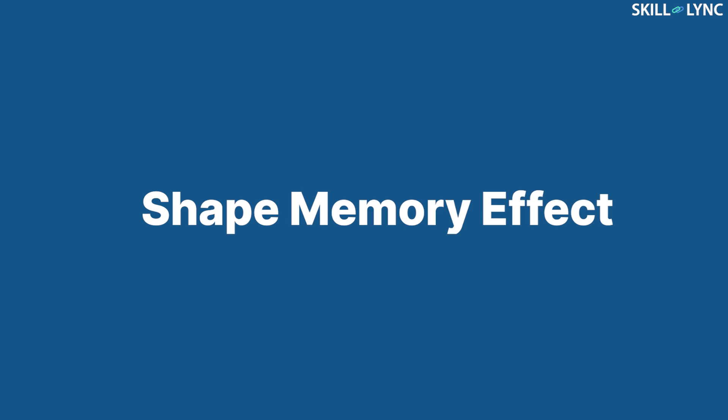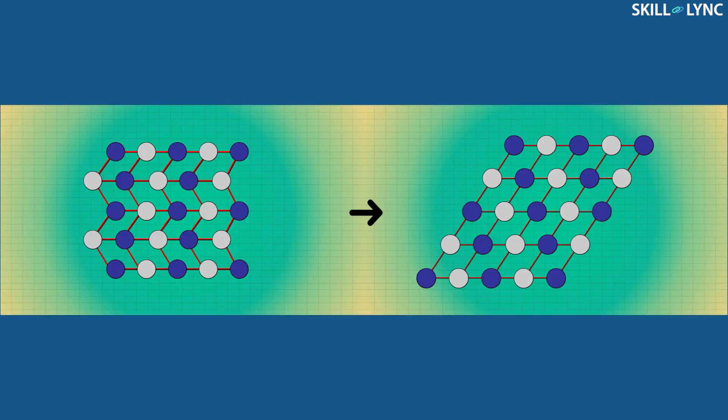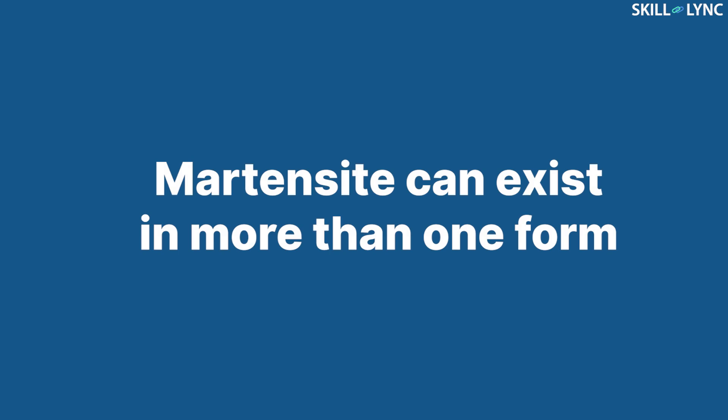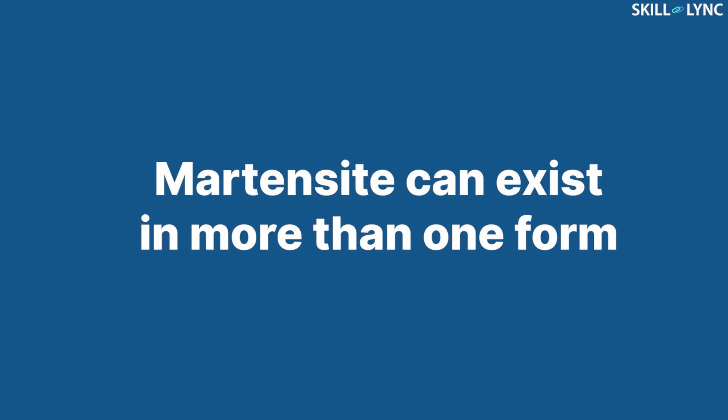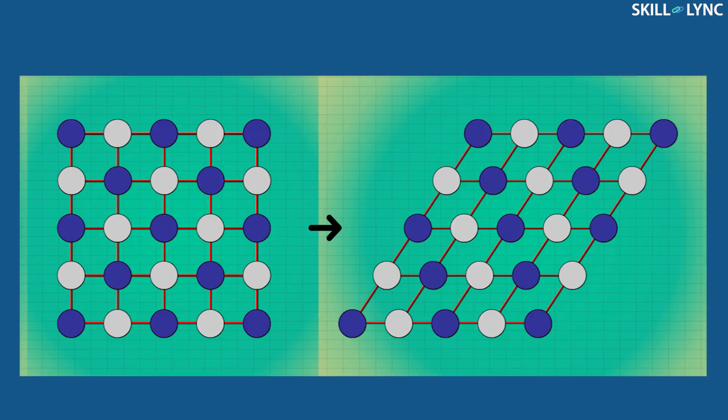As said, martensite can be easily deformed when a force is applied and stays in the deformed shape even after the removal of the force. Thus martensite can exist in more than one form. But when heated, any form of martensite can transform into austenite, and upon cooling they return back to the original shape before deformation.